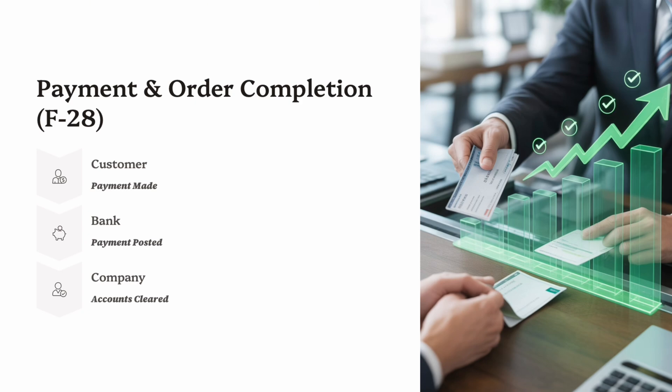Once payment is received, the full cycle is complete: order, delivery, billing, payment — the system now shows the customer's account is fully settled. For example, if the customer paid invoice number 800123, you open F-28, match the open item, and post the payment. SAP clears the receivable and updates the company's cash balance. At this point, the sale is fully closed both operationally and financially, completing the O2C process in SAP SD.